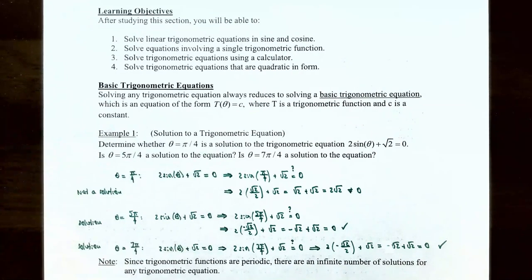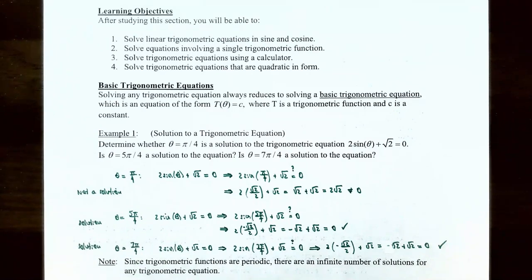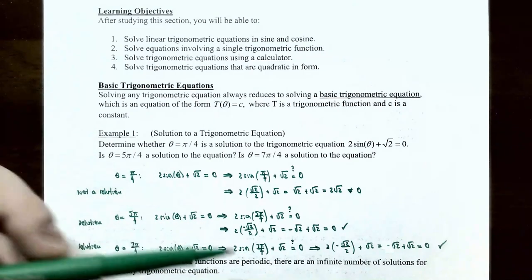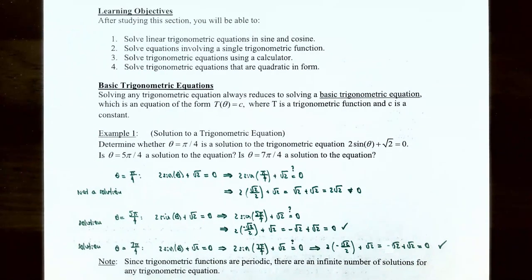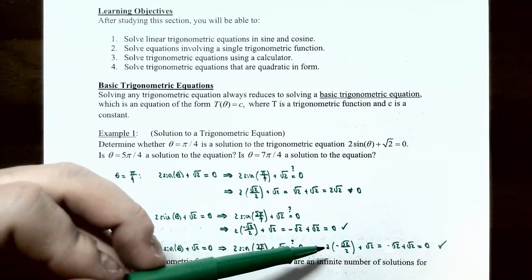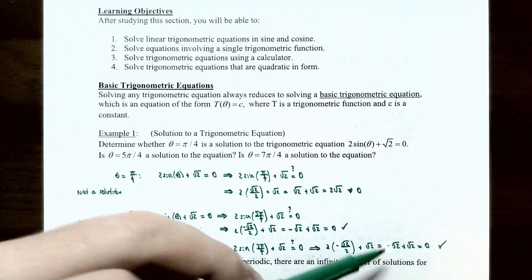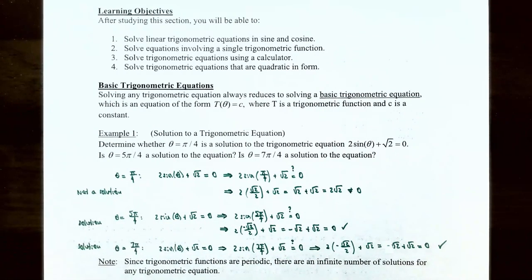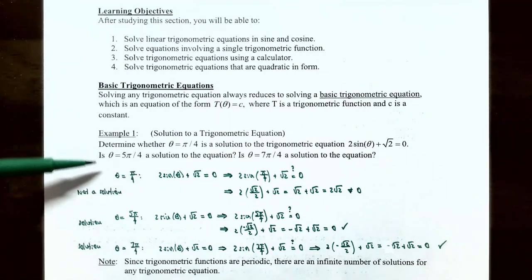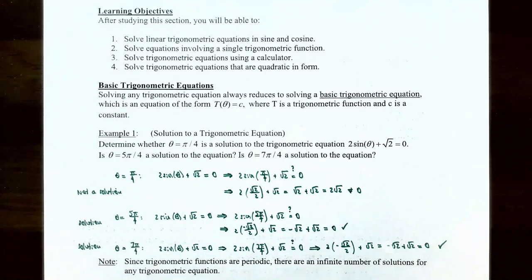Checking θ = 7π/4: this angle is in quadrant 4, where sine is also negative. So sin(7π/4) = −√2/2, giving 2·(−√2/2) + √2 = −√2 + √2 = 0. So θ = 7π/4 is also a solution. Both 5π/4 (quadrant 3) and 7π/4 (quadrant 4) yield a sine value of −√2/2, satisfying the equation.